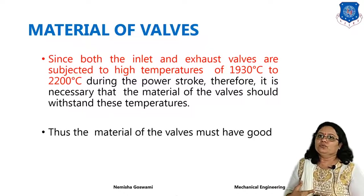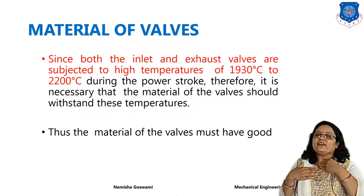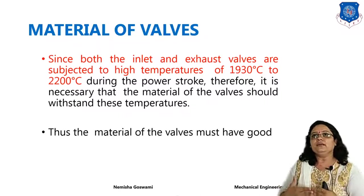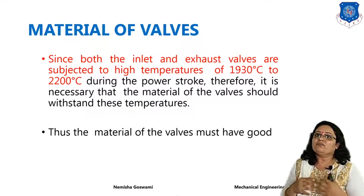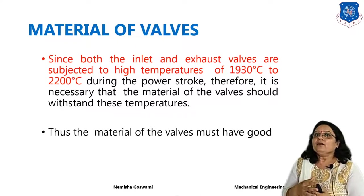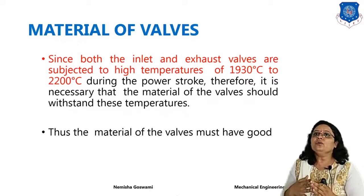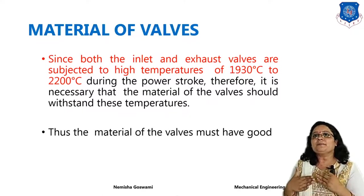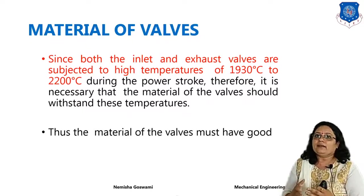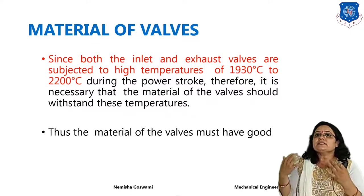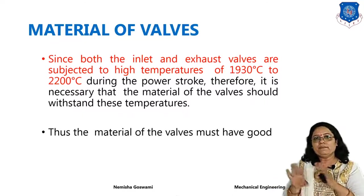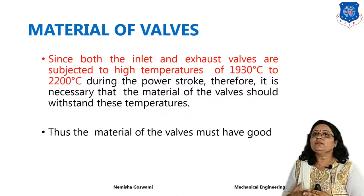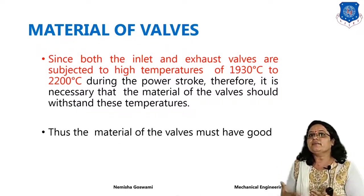What material should be used for the valve? In internal combustion engines, very high temperature and pressure are produced. The temperature range varies from 1930°C to 2200°C during the power stroke. It is compulsory that the material of the valve withstand that temperature — if the material fails, the overall design of the internal combustion engine fails. Therefore, the material must have good heat conduction to continuously transfer heat, must be heat resistant, and must withstand the maximum temperature.